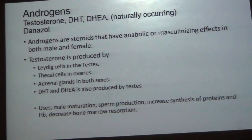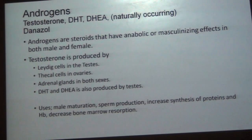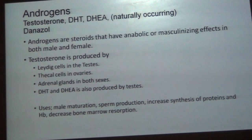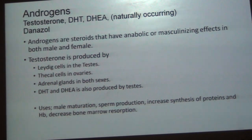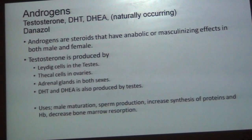Next class is androgens. Naturally occurring androgens are testosterone, DHT, and DHEA. Androgens are steroids that have anabolic or masculinizing effects in both males and females. Testosterone is produced by Leydig cells in the testes, thecal cells in the ovaries, and adrenal glands in both sexes. DHT and DHEA are also produced by the testes. Testosterone is the male sex hormone, very important for male maturation, sperm production, increased synthesis of proteins and hemoglobin, and decreased bone marrow dysfunction.